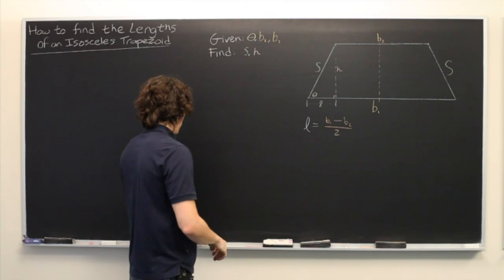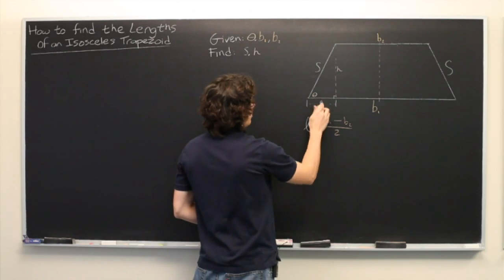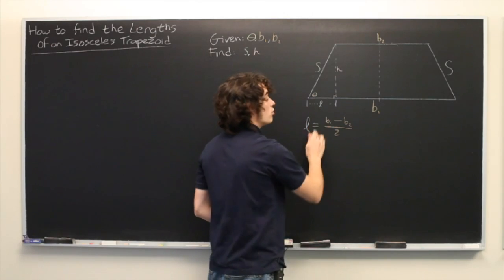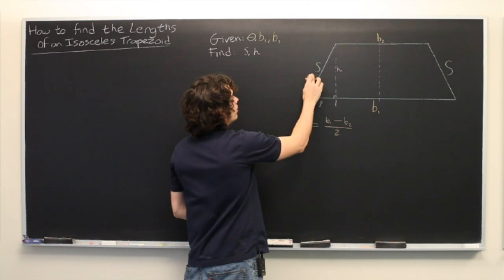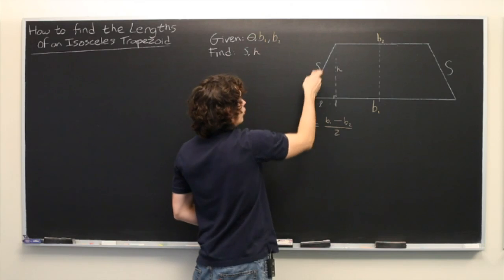Now that we have theta and L, we can use trigonometry to find the other two sides of this right triangle.